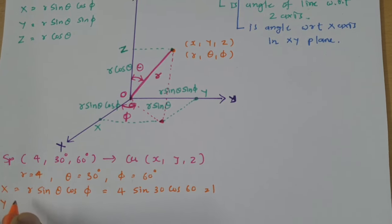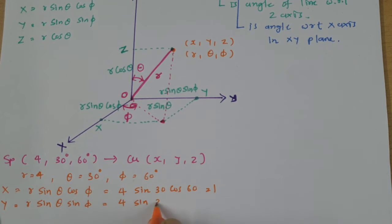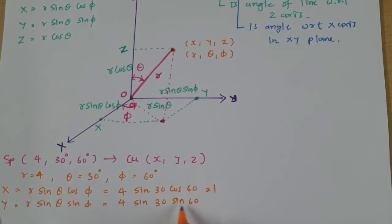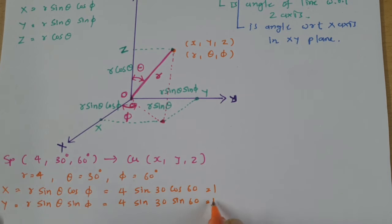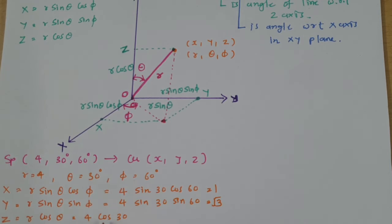Now Y equals R sin Theta sin Phi, so that is 4 times sin 30 times sin 60. Sin 30 is one-half and sin 60 is root 3 over 2. So 4 times one-half times root 3 over 2 gives root 3. And for Z, Z equals R cos Theta, so R is 4 and cos 30 is root 3 over 2, giving 2 root 3.